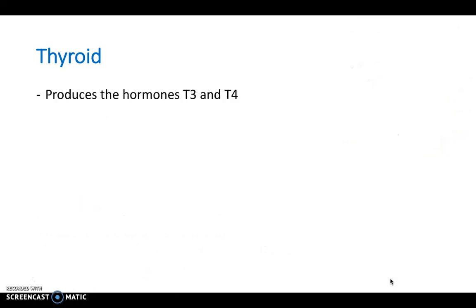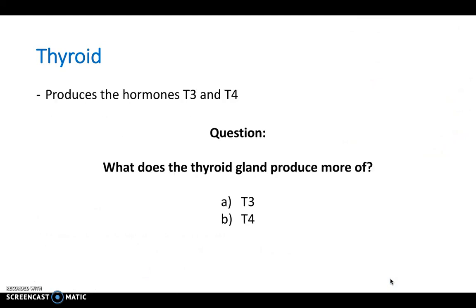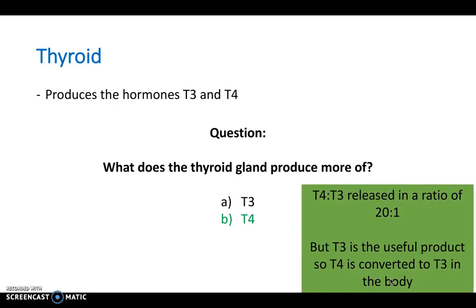The thyroid produces the hormones T3 and T4. A key question: what does the thyroid gland produce more of — T3 or T4? The answer is T4. It actually produces T4 to T3 in a 20 to 1 ratio, so it produces a lot more T4 than T3. However, T3 is the active useful product that our body needs, and therefore within the body when it's released, T4 needs to be converted to T3.